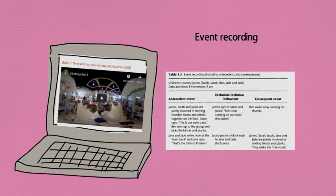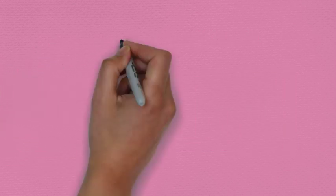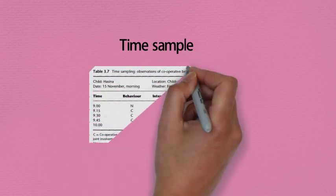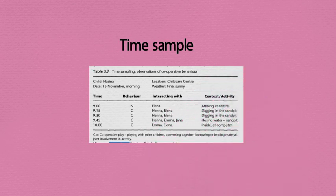Time sampling is the second technique, and this one records over time. You will draw up a sheet with time intervals—here we've got every 15 minutes—and again looking at specific criteria. Here they're looking for cooperative play by child, so you can choose what you actually look for around notions of play based on the things that you think are important.